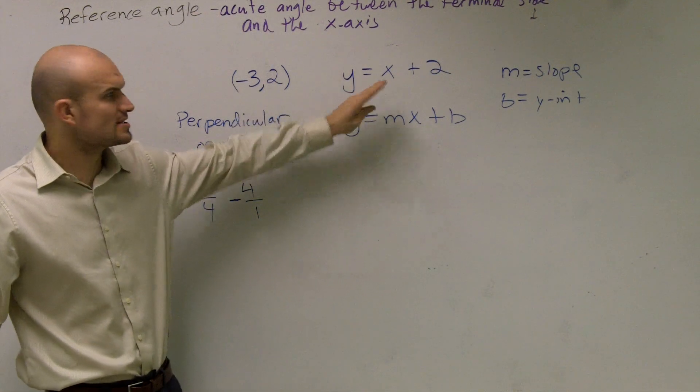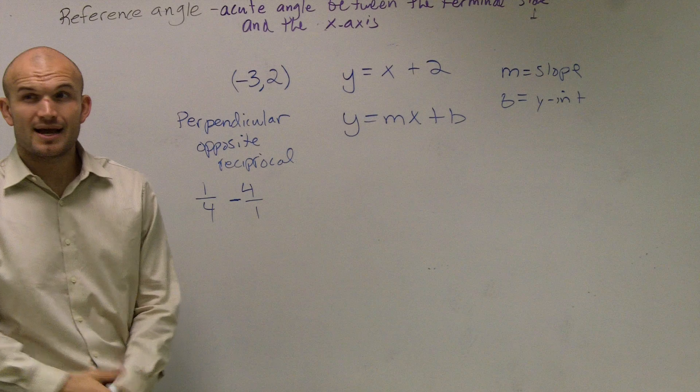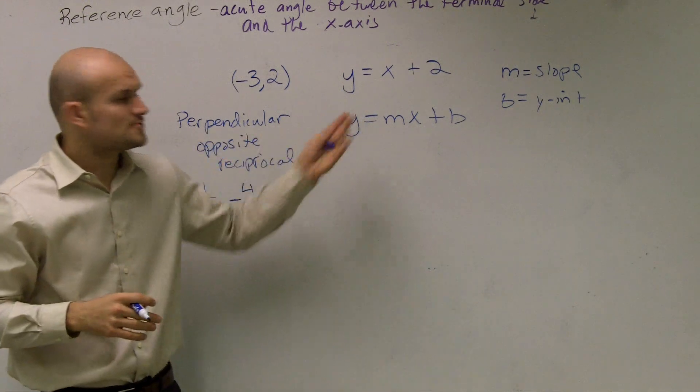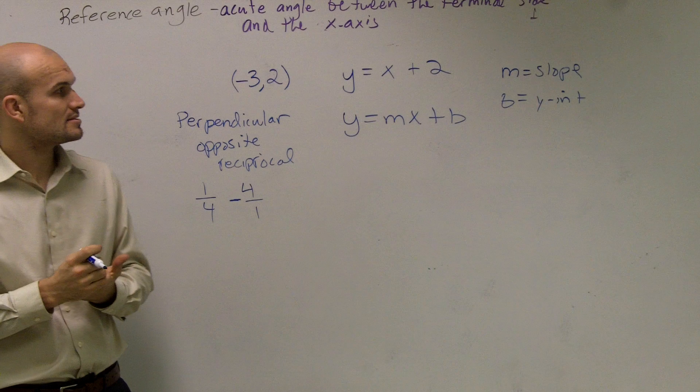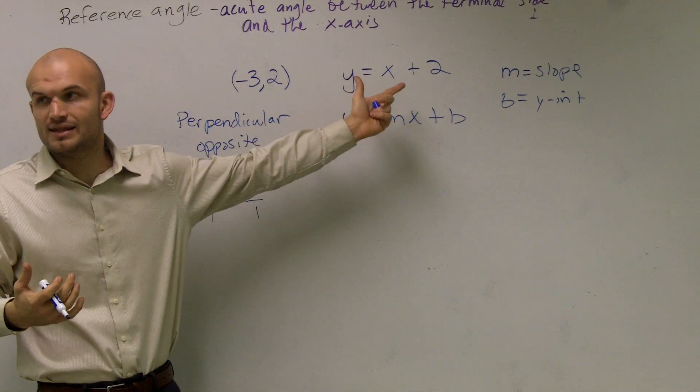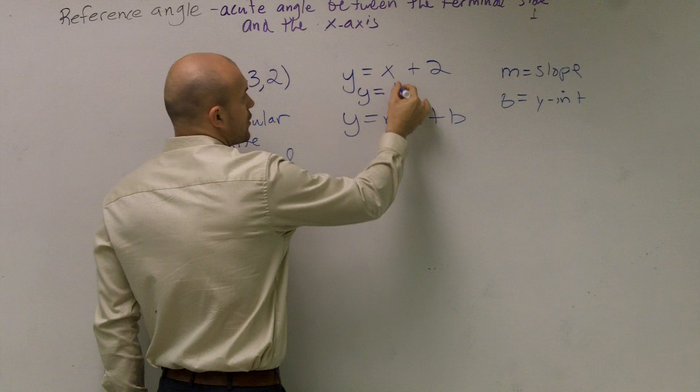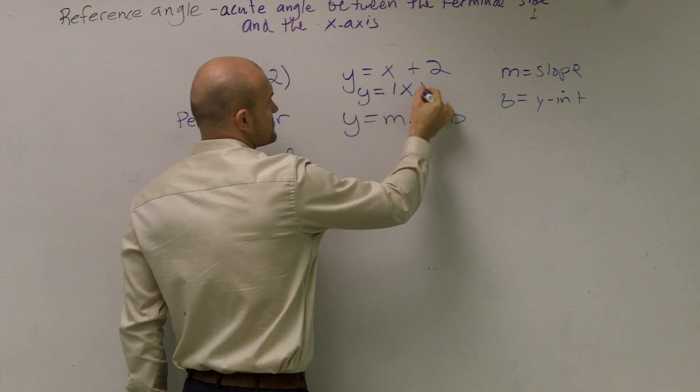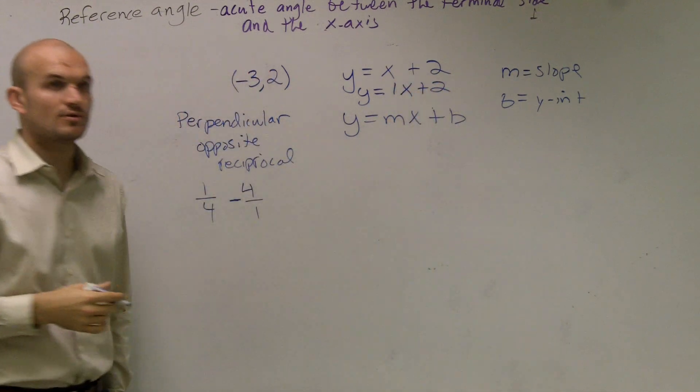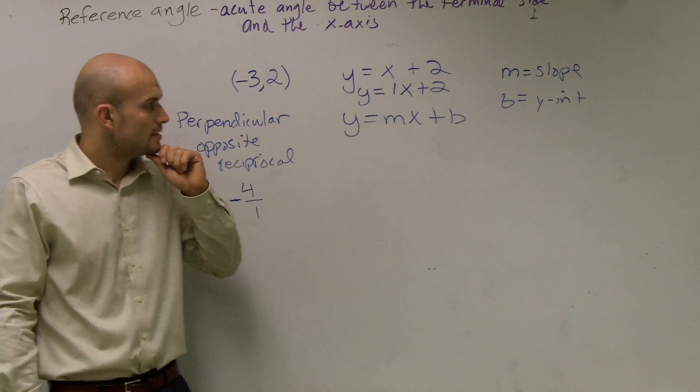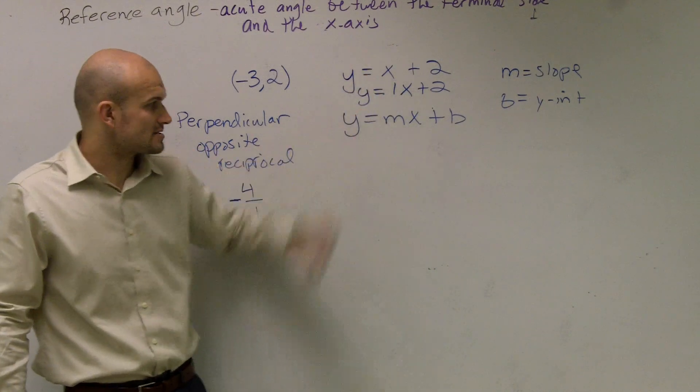So what I need to look at is, well, what is the slope for y equals x plus two? And this problem is difficult because there's no number in front of the x. Well, we need to remember that y equals one times x plus two, right? If there's no number in front of our x, we can assume that one is in front of there because one times x is going to give you x.